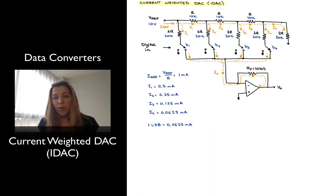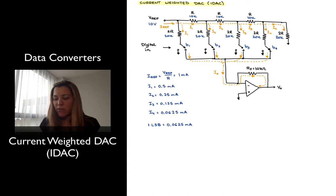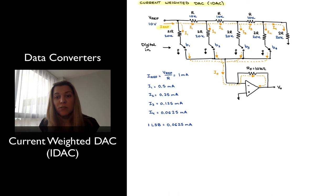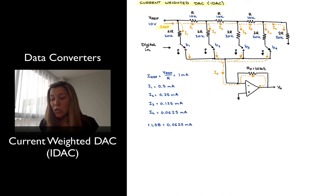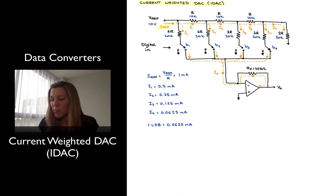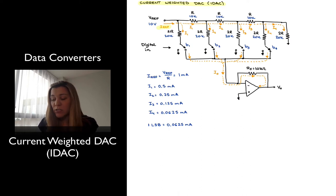Here we have a possible implementation of an IDAC. Notice that in this case we have generated our reference current, IREF, by simply using a reference voltage VREF. In practice, if you were to design this — especially in an integrated circuit — you would typically generate IREF, or the different reference currents, via just current sources, because they are easily implementable. But for the sake of example, it does the job. So I have my VREF voltage, which generates an IREF current, and that IREF is fed into an R2R network of resistors.